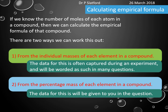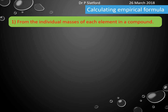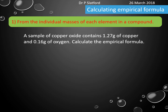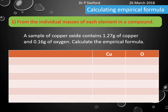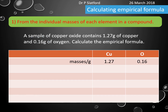Let's do a few examples using Method 1 — the individual masses of each element in a compound. A sample of copper oxide contains 1.27 grams of copper and 0.16 grams of oxygen, and we want to calculate the empirical formula. The easiest way is to tabulate it — put it in a table. I've got my two atoms in the table and I write down the masses given in the question: 1.27 grams of copper and 0.16 grams of oxygen.